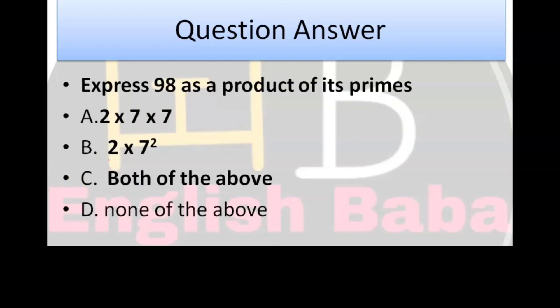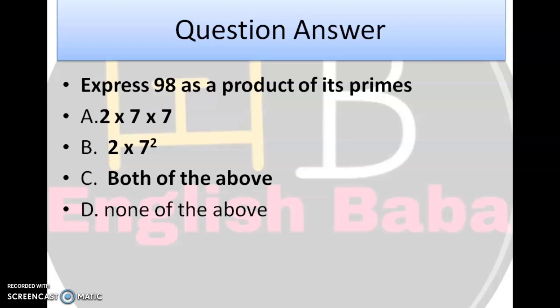Next question. Express 98 as a product of its prime. 98 ka prime factorization ki ji jiye, aur answer check ki jiye. 2 into 7 into 7, 2 into 7 square, both of the above, none of the above. Ab aap 98 ko jab factors karenge, to hamei answer milega 2 into 7 into 7, which can also be written as 2 into 7 square. To hameara correct answer hai, option number C, both of the above.